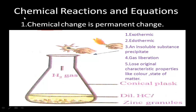Hi viewers, this is Smart Academy. We are providing 10th physical science material. Today we are discussing about chemical reactions and equations. In this chapter, we are going to explain what are the properties of chemical reactions and how they are balanced.